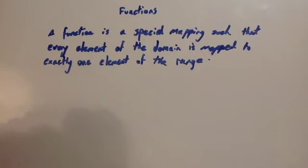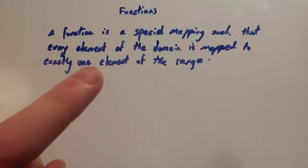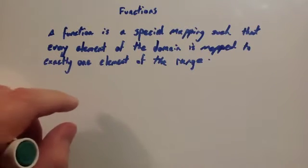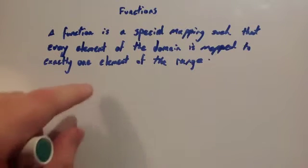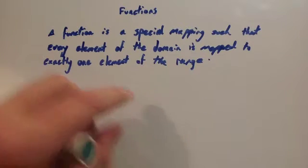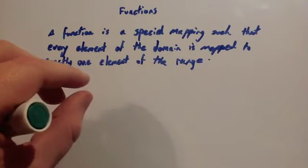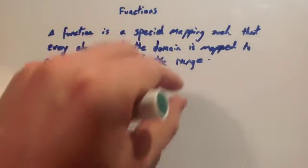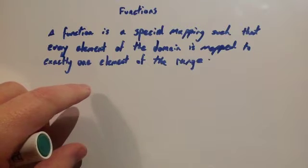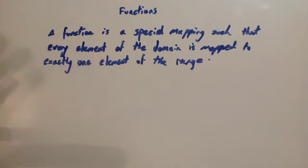Let's have a look at what a definition of a function is. A function is a special mapping such that every element of the domain is mapped to exactly one element of the range. So that means every element of the domain goes to exactly one element of the range. Now, two of them could go to the same one — that's fine, because both of those map to exactly one value of the range. However, you couldn't have a value of the domain going to two different values of the range. That wouldn't be a function.